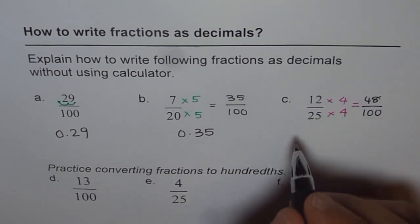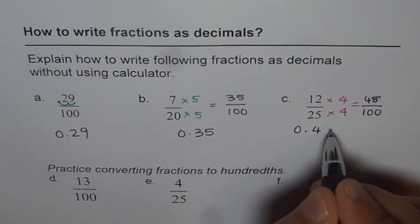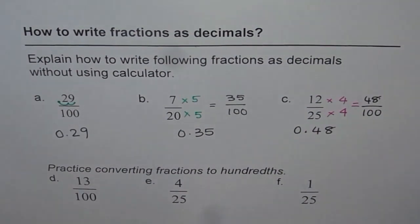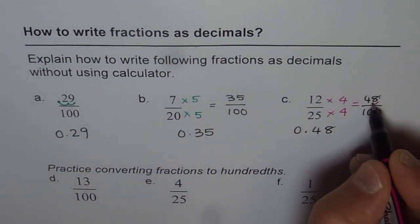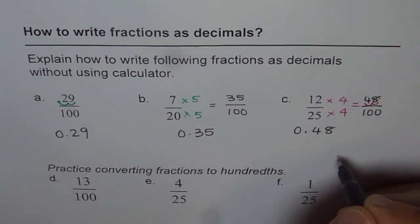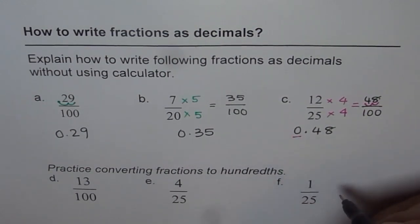And here 4 quarters is 100. Now write them as decimals. It should be 0.48. As you know, when you divide by 100, the decimal moves two places. And it is a good practice to write 0 before the decimal.